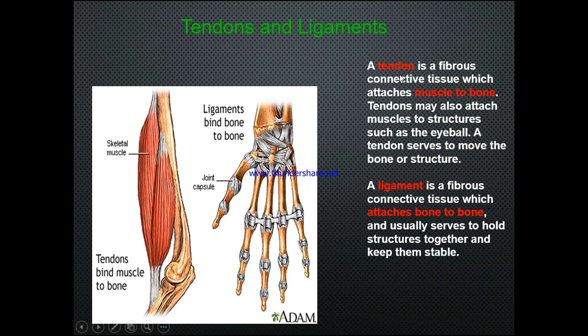Regarding tendons and ligaments: a tendon is a fibrous connective tissue which attaches muscle to bone — tendons may also attach muscles to structures such as the eyeball, and they serve to move the bone or structure. A ligament is a fibrous connective tissue which attaches bone to bone, and it usually serves to hold structures together and keep them stable.